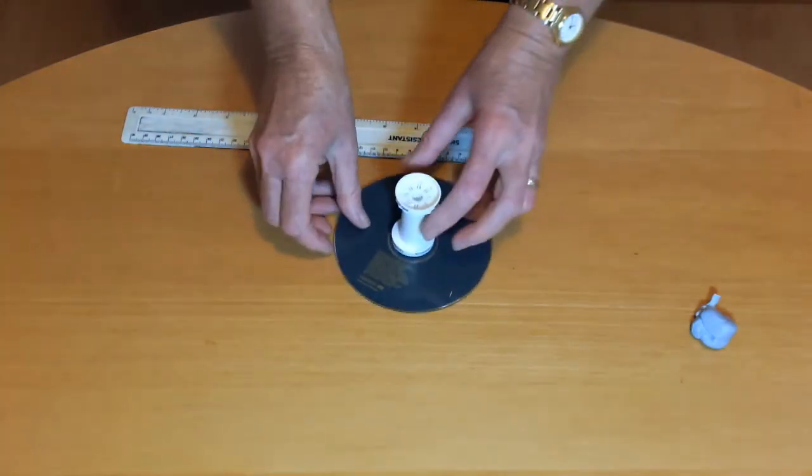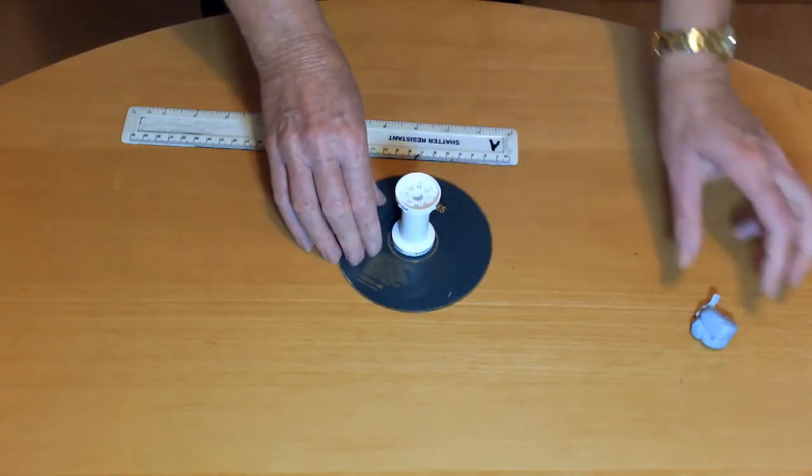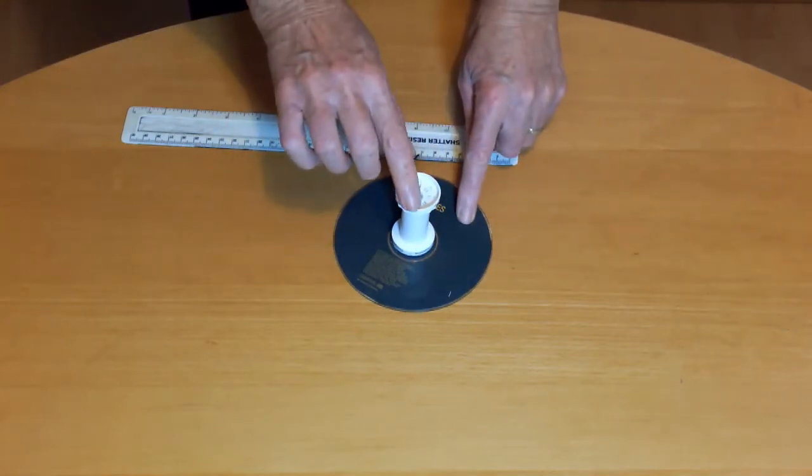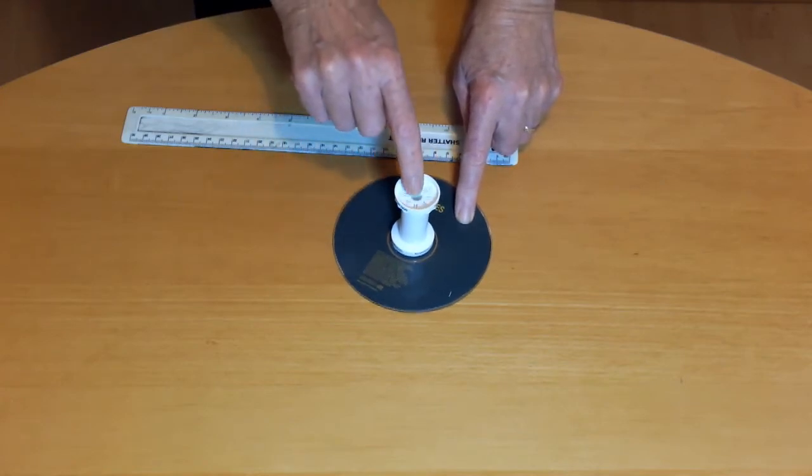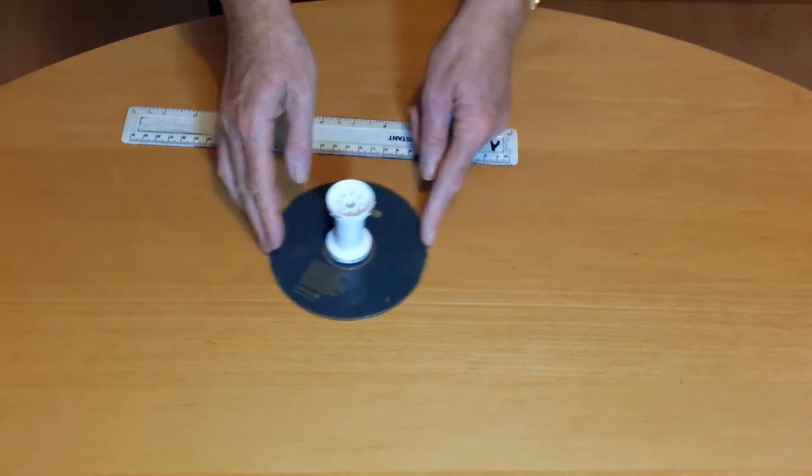Turn the cotton reel over and do the same with the second CD. If the end of the cotton reel is hollow like this one, you need a thicker sausage of blue tack to fill it. You mustn't get blue tack in the central hole as this will slow the CD eraser down.